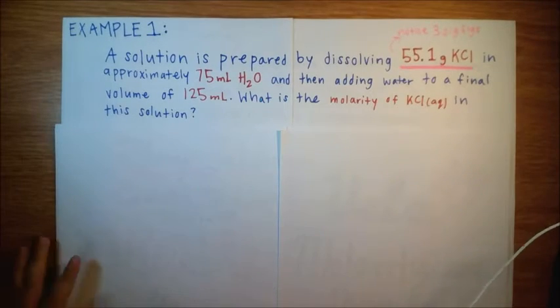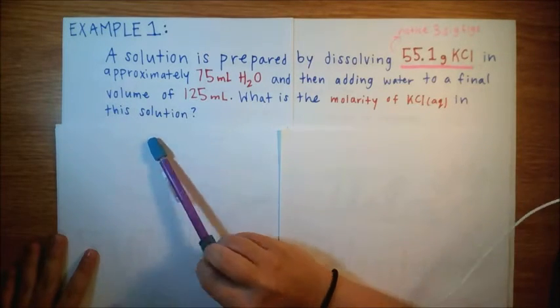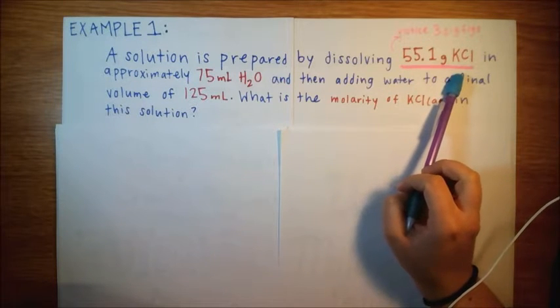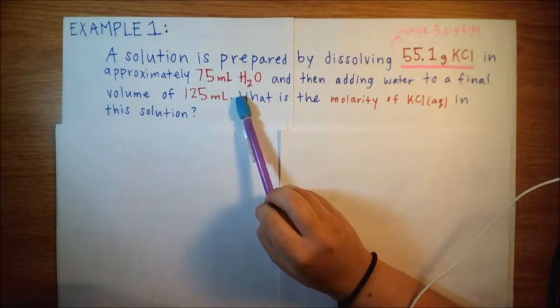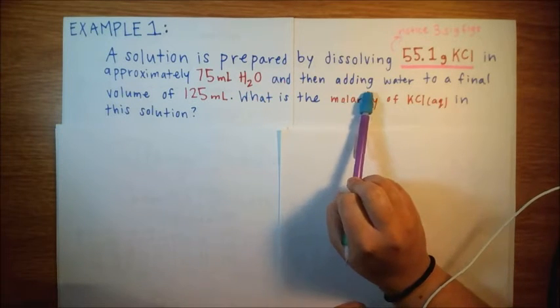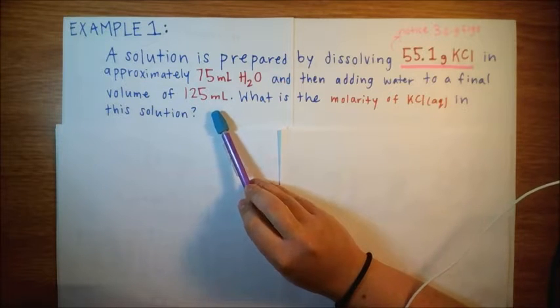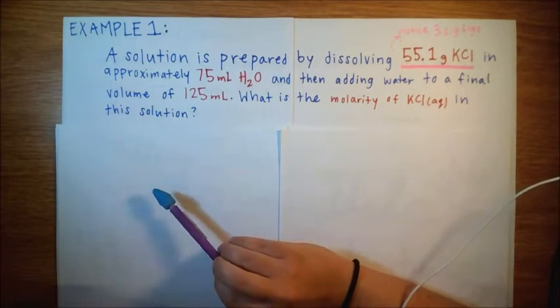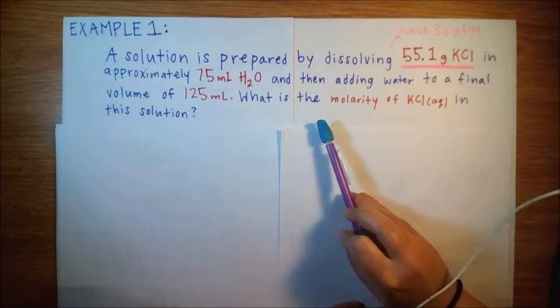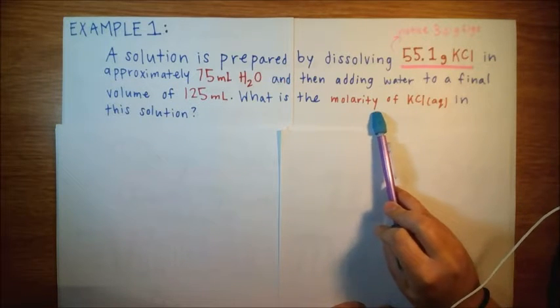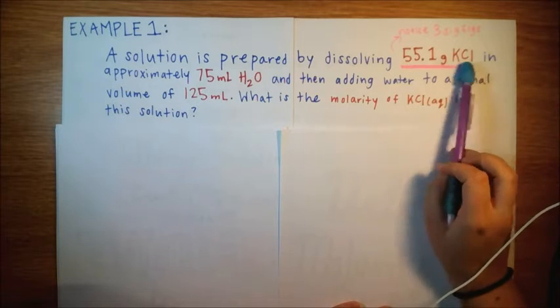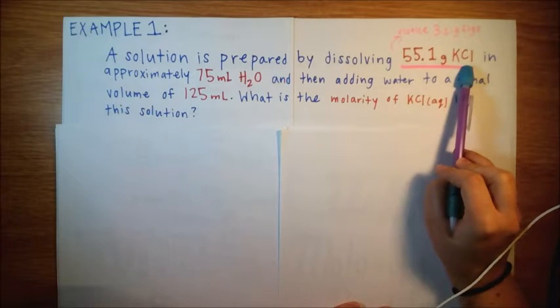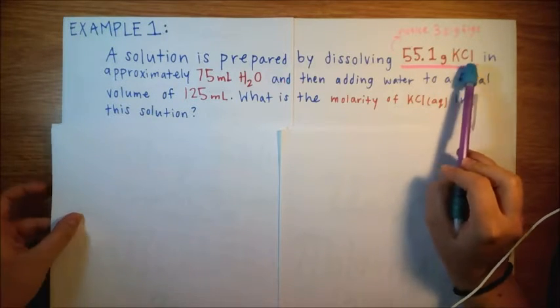Here's a problem you might get on a test or in your homework. A solution is prepared by dissolving 55.1 grams of potassium chloride in approximately 75 milliliters of water and then adding water to a final volume of 125 milliliters. What is the molarity of potassium chloride in this solution? So here in red, I have the given information and also what we're solving for. So we're solving for the molarity of potassium chloride. And just notice also that the values are given with three significant figures. So when we have our final answer, we want to make sure to include three significant figures.